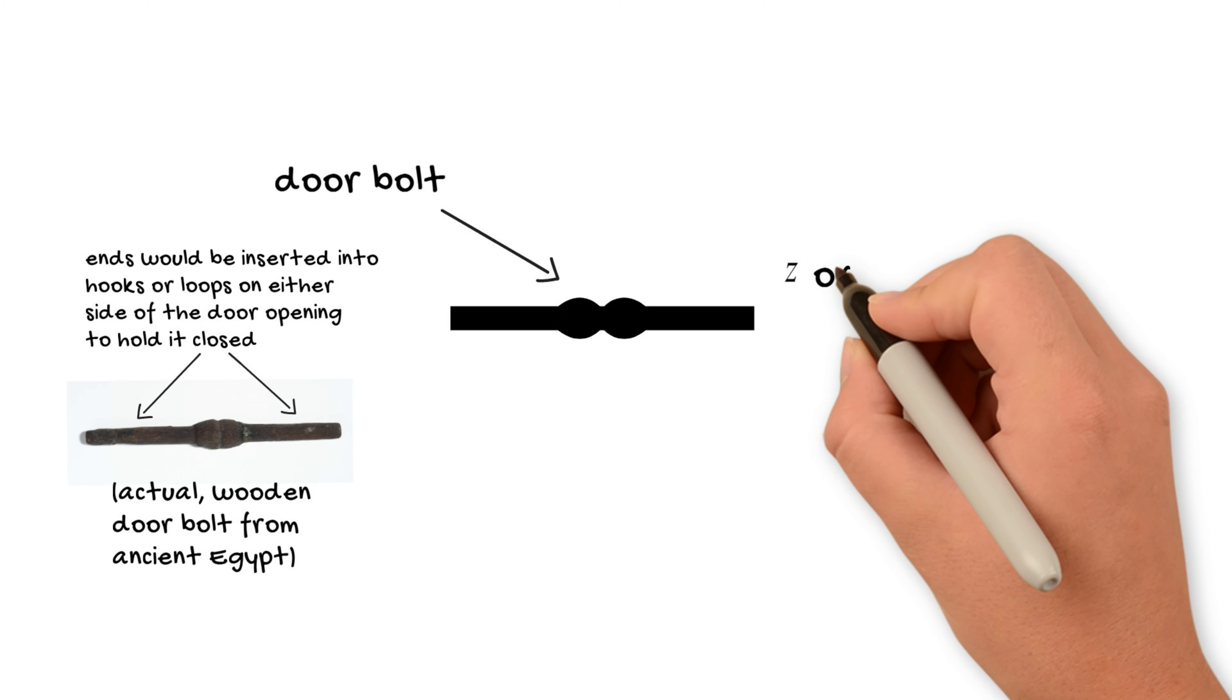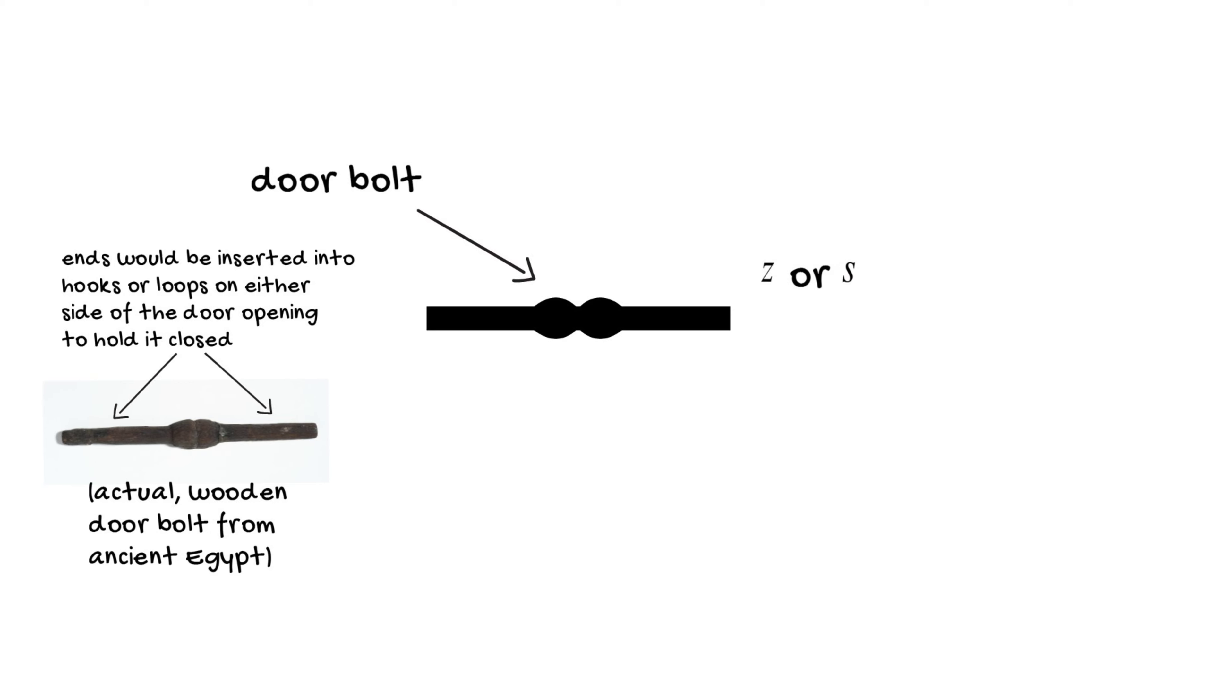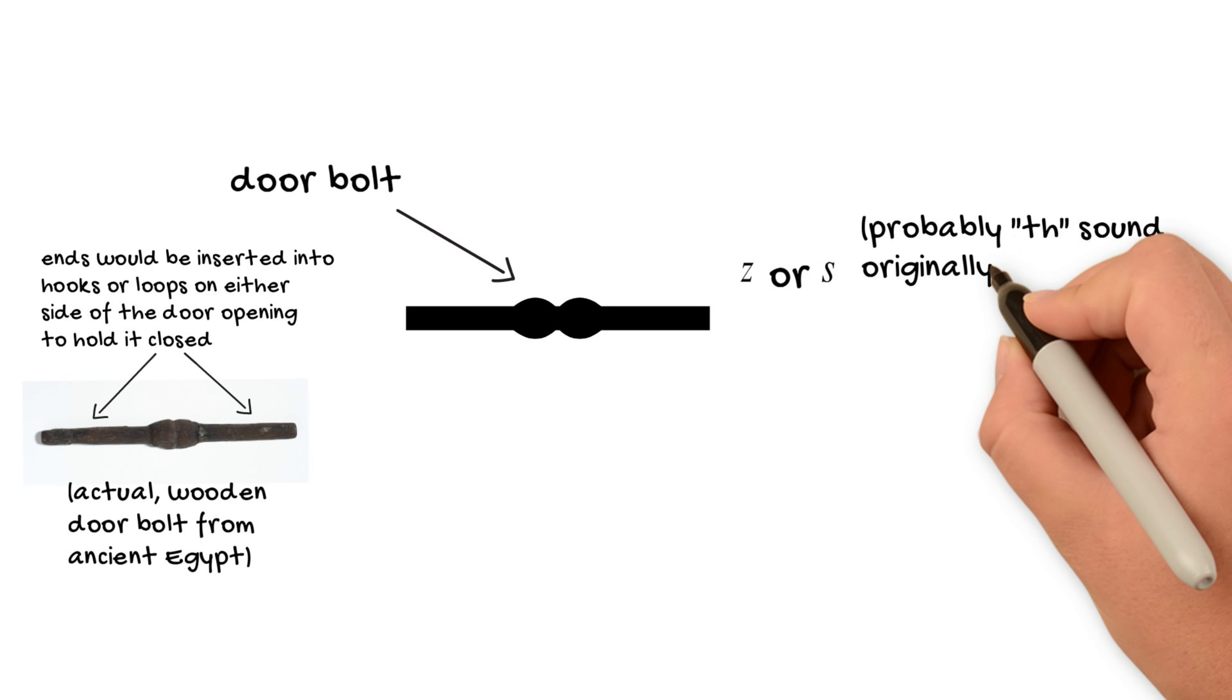Now, earlier on in Egyptian though, it probably was originally more of a TH sound, similar to a TH in English, but it became S, the same with the folded cloth S.